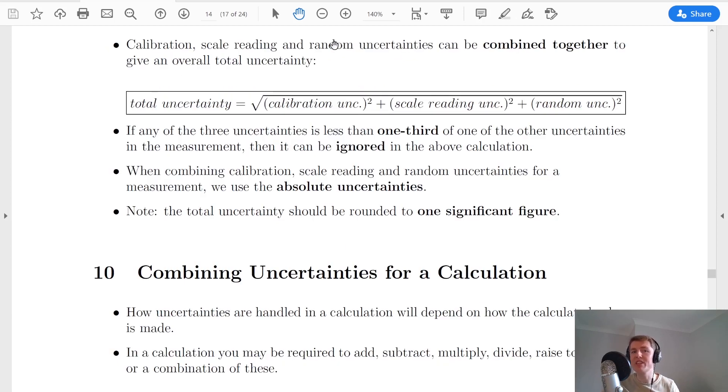The calibration, scale reading and random uncertainties however must be combined to give an overall total uncertainty in your measurement. The way we do that is we use this relationship here, where the total uncertainty is equal to the square root of the calibration uncertainty squared plus the scale reading uncertainty squared plus the random uncertainty squared.